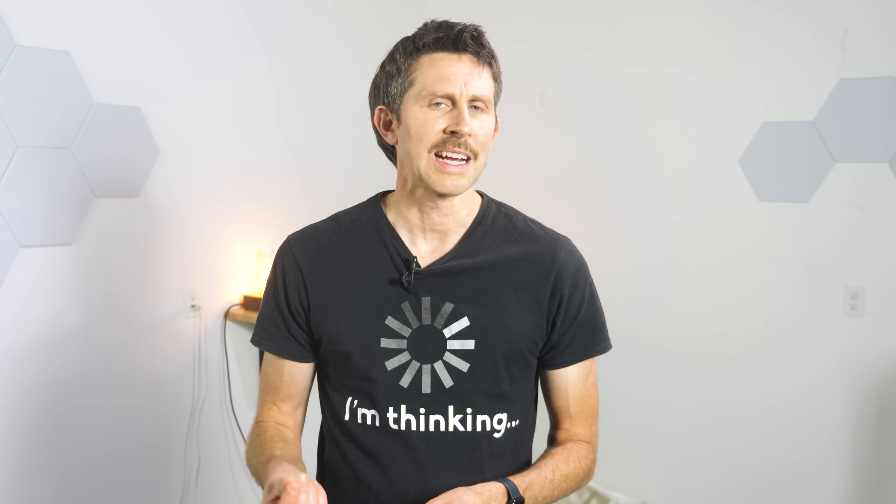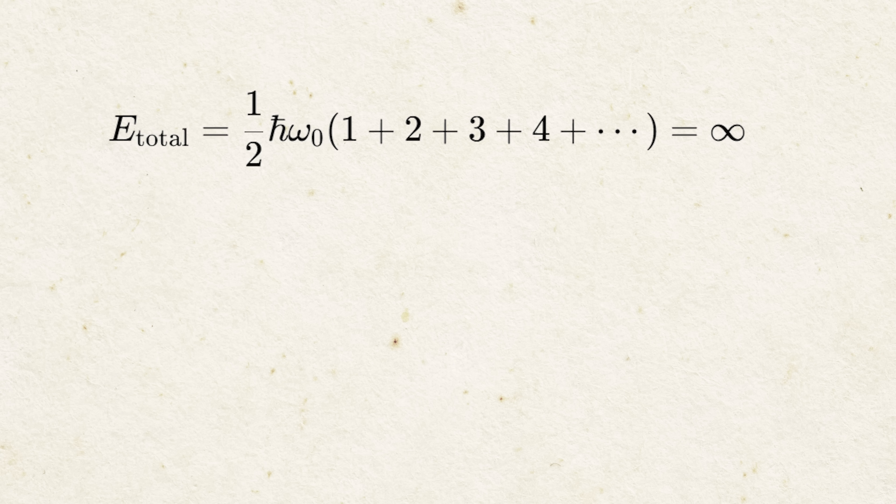The uncertainty principle guarantees that a field can never have exactly zero energy. So to find the overall energy, we just have to add together the lowest vibrational mode of all the frequencies. And guess how many frequencies there are? Infinite. So we have to add mode 1 plus mode 2 plus mode 3 plus mode 4 all the way up to mode infinity. So you see that we get this summation of 1 plus 2 plus 3 plus 4 all the way to infinity.